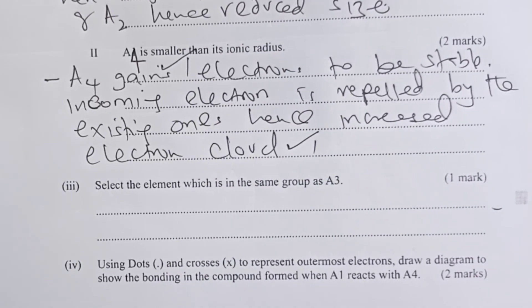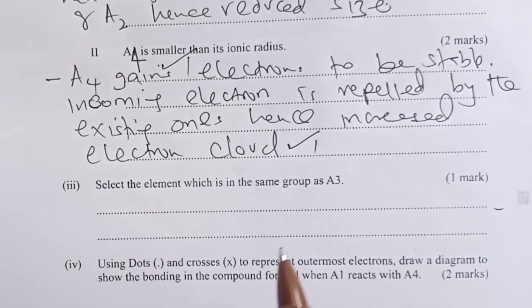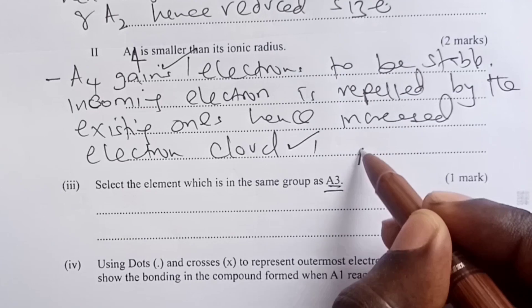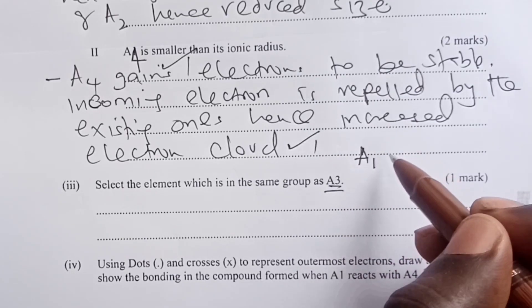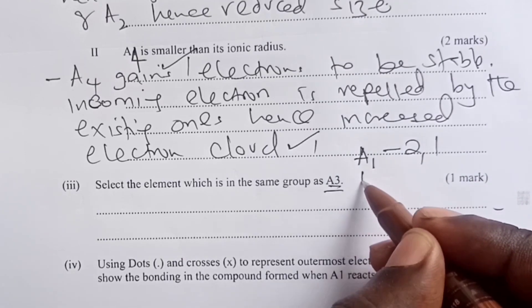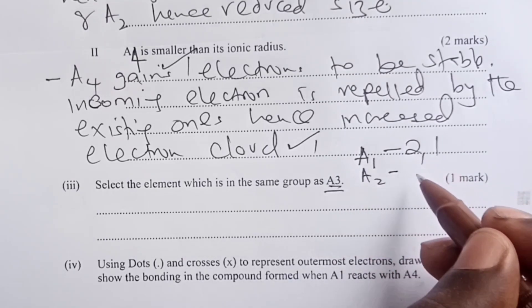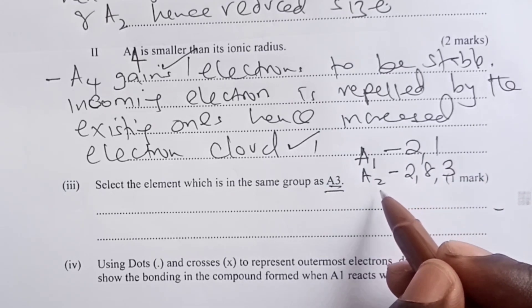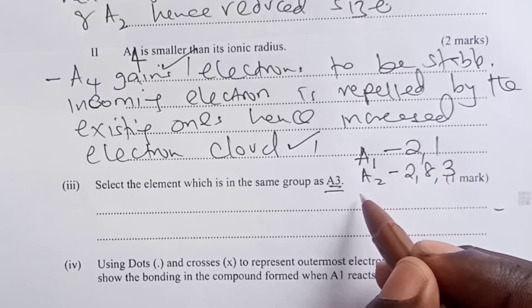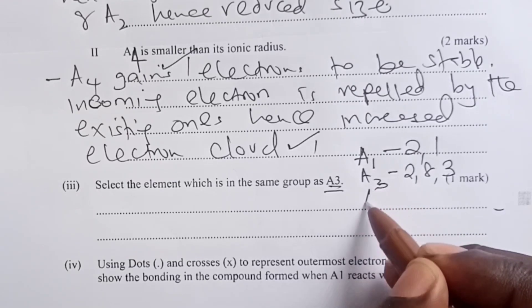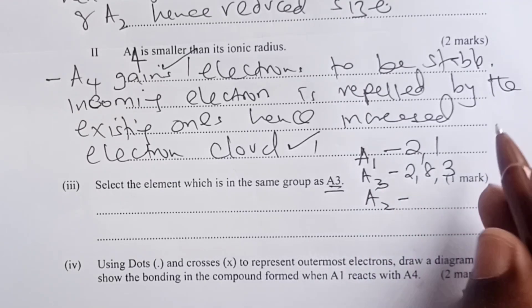And here we are at select the element which is in the same group as A3. So probably we go through the elements again. A1 has a configuration of 2,1. A2 has a configuration of 2,3. A3, atomic number 13, configuration 2,8,3. This is A3, sorry, not A2. A2 is atomic number 5, configuration 2,3.